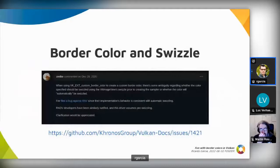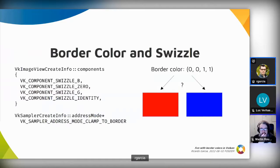While working on the Zink method driver, Mike discovered that the interaction between a non-identity swizzle and custom border colors produced different results for different implementations. He was wondering if the result was specified at all in Vulkan. Let me give you an example.